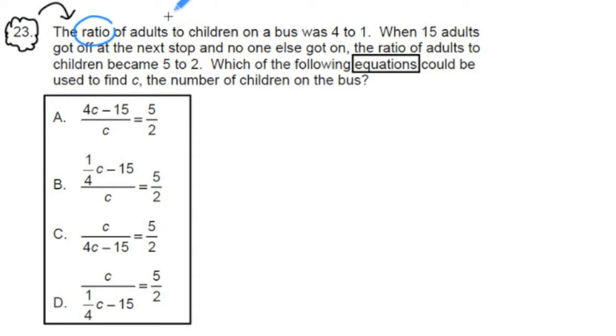We can think of ratios as 4 to 1 or we could write it as 4 dot dot 1 or we could write it as a fraction. We could write it as 4 over 1. So 4 dot dot 1, 4 to 1, 4 over 1, they all mean the same thing.